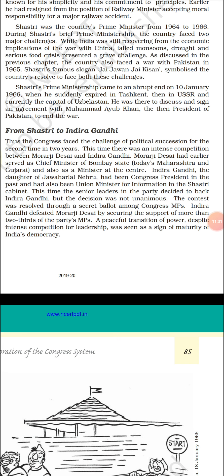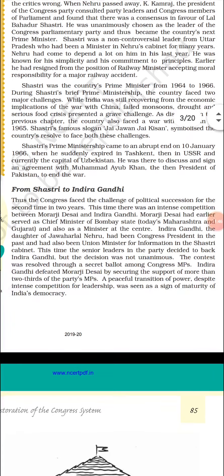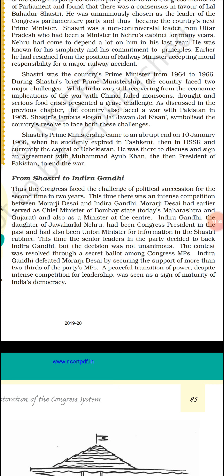The fierce competition was resolved through a secret ballot election among Congress MPs. Indira Gandhi defeated Morarji Desai by securing more than two-thirds of the party's MPs. Despite the intense competition, the peaceful transition of power was seen as a sign of the maturity of India's democracy.